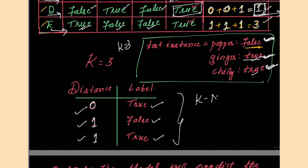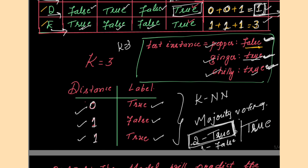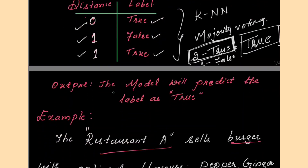Since we are using the KNN algorithm, the criteria to predict the label is majority voting. Majority out of 3: 2 are true and 1 is false. So the majority is true. Therefore, the test instance — pepper false, ginger true, chili true — belongs to label true. The model will predict the label as true.